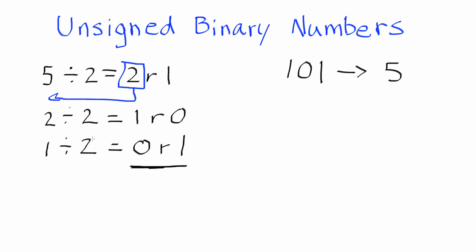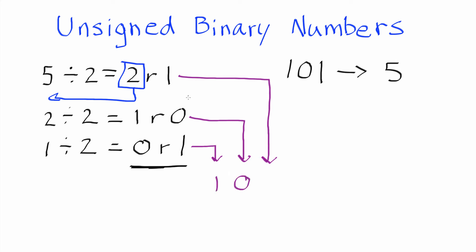So the next step is we start with this remainder right here, and that becomes the first number. This one becomes the second number of our binary notation, and that one will be the third. We just keep going up the list — we only had 3 numbers this time. So basically 1, 0, and 1. That represents the number 5 if we're dealing with base 10. If we're dealing with base 2, or binary, we have the number 101.